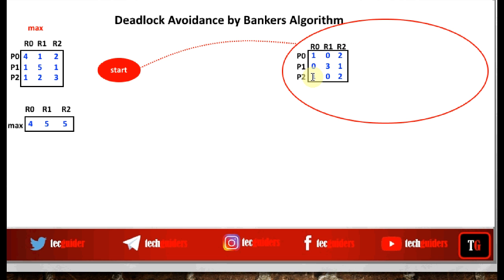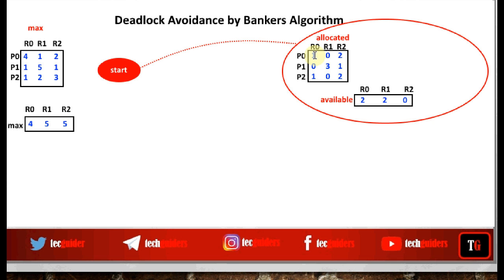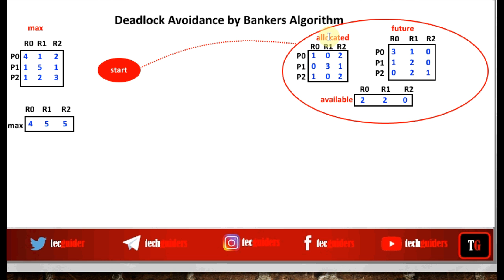Two instances of R0 are already allocated, so we have remaining four minus two = two instances of R0. Then five minus three = two instances of R1, and five minus five = zero instances of R2. Since some resources are already allocated, the maximum future need of the processes will change. P0 is allocated one instance of R0, so in the future it will need a maximum of four minus one = three instances of R0, one instance of R1, and two minus two = zero instances of R2, and similarly for other processes.